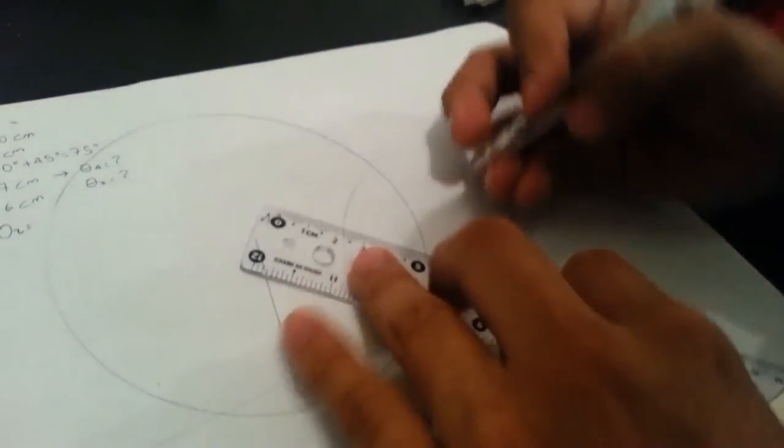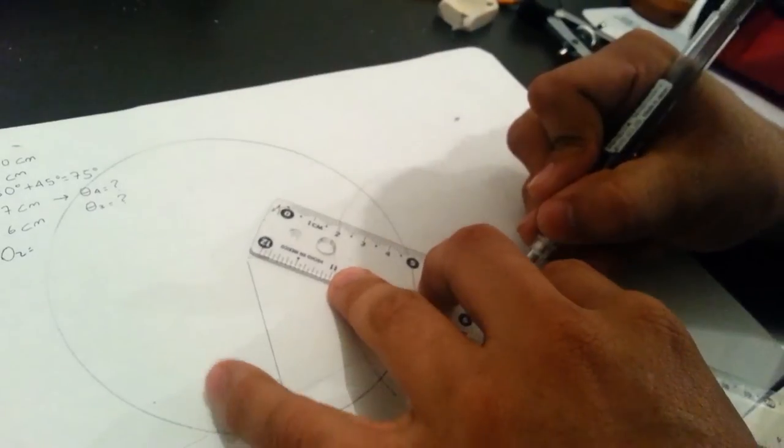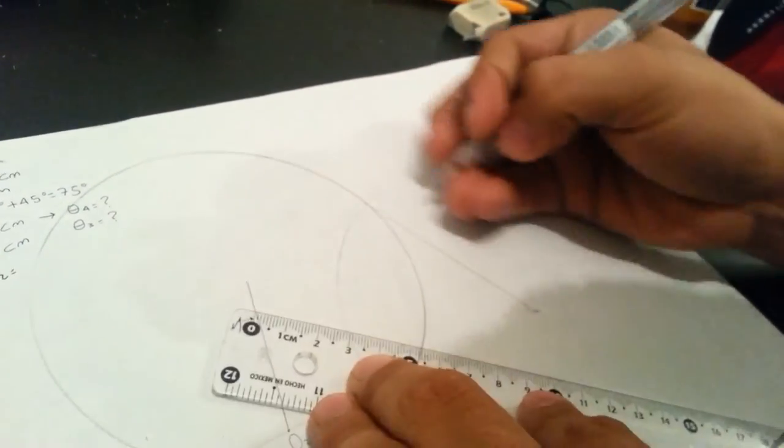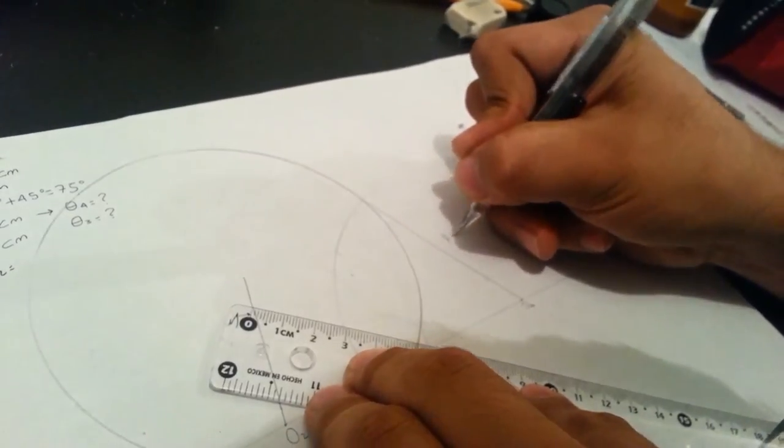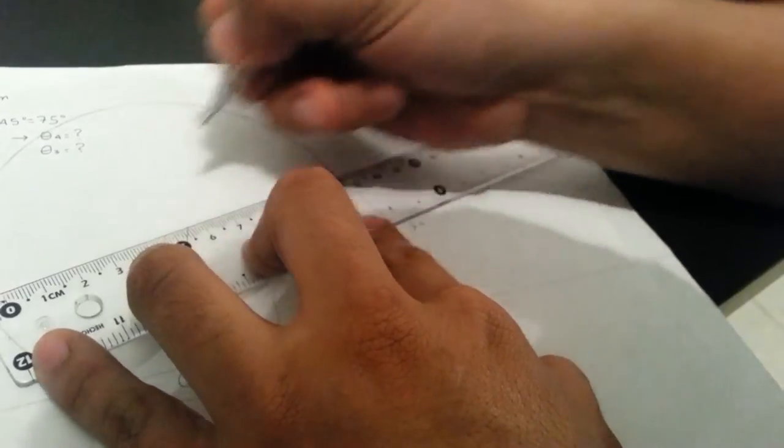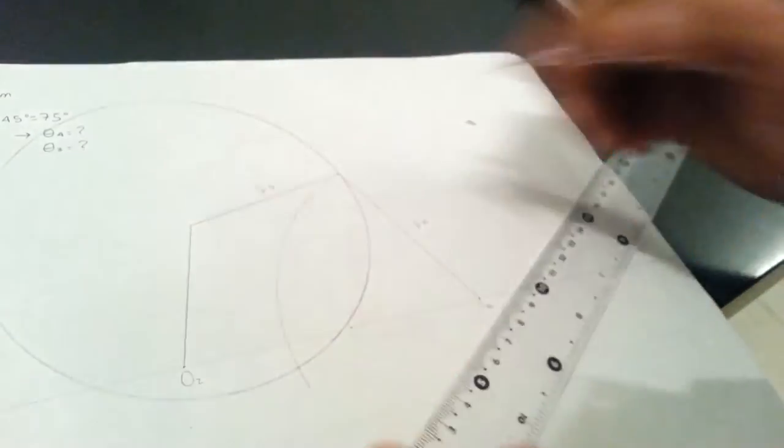And we finish. Because we can see the two positions of the mechanism. Here is link 4 and here is link 3 in one position.